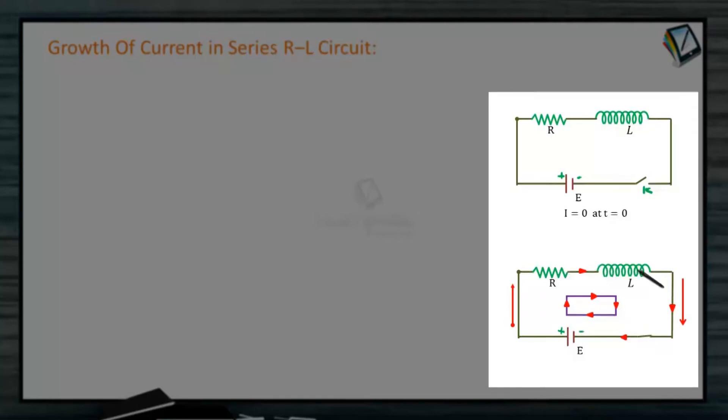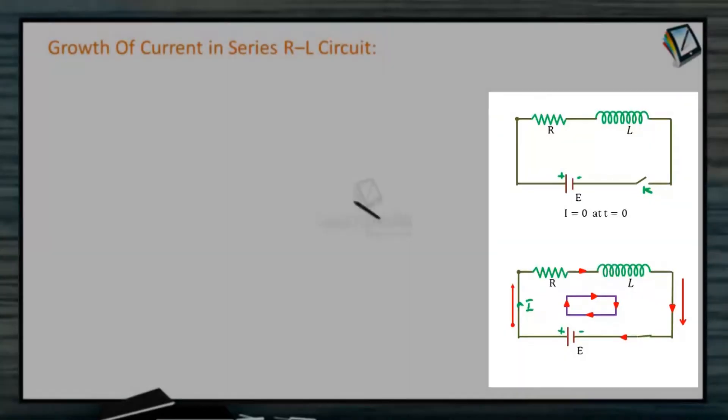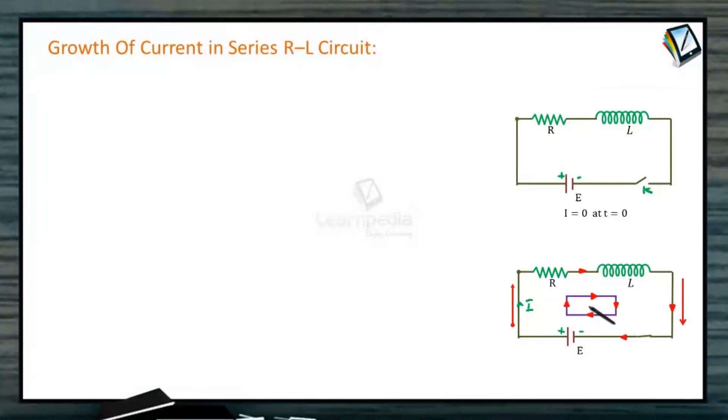Therefore, there will be a net EMF developed in the circuit: E minus L di by dt. And this net EMF should provide the total current in the circuit. That current, if we call it I, should be equal to I into R. Or using Kirchhoff's law, we can calculate the value of current in terms of resistance R and the inductor L.